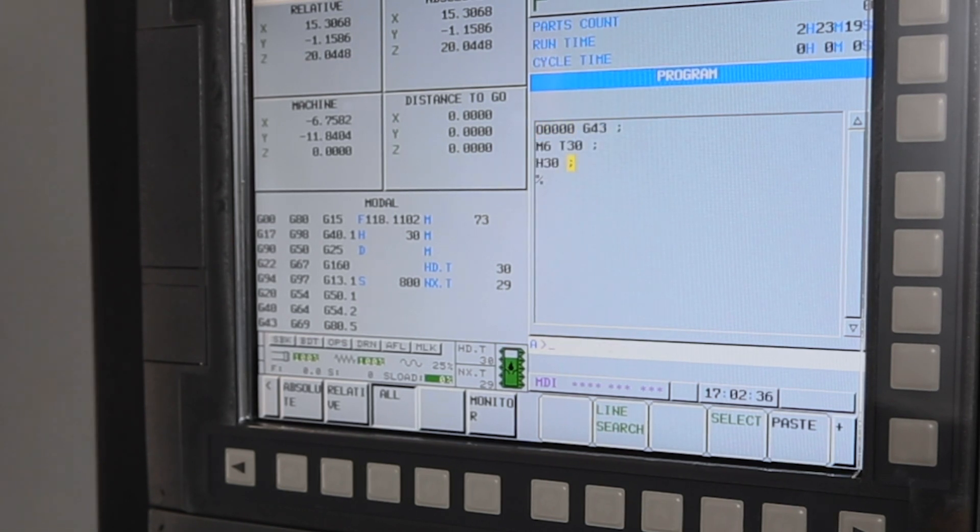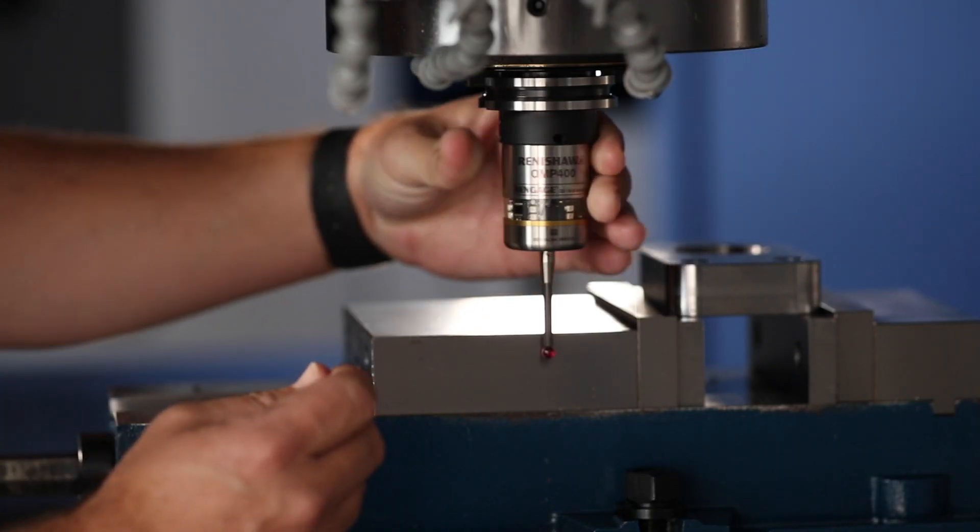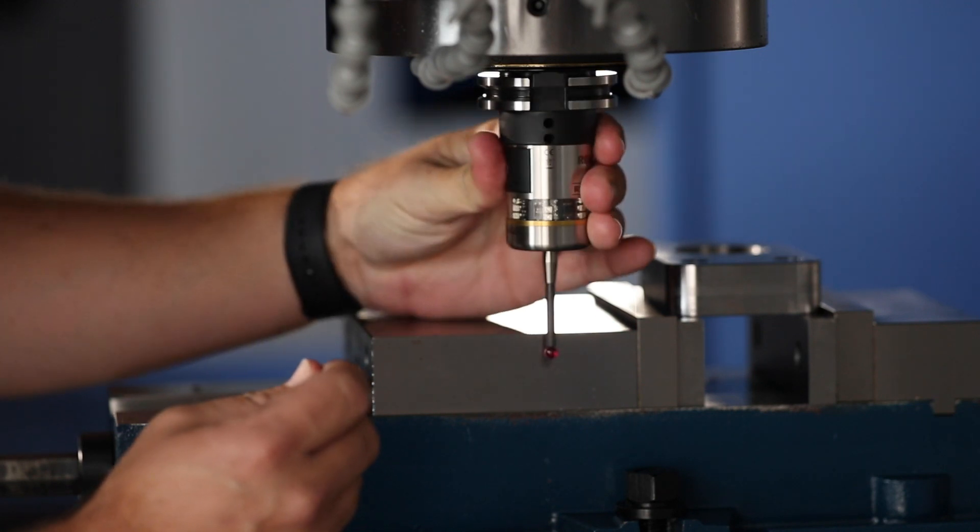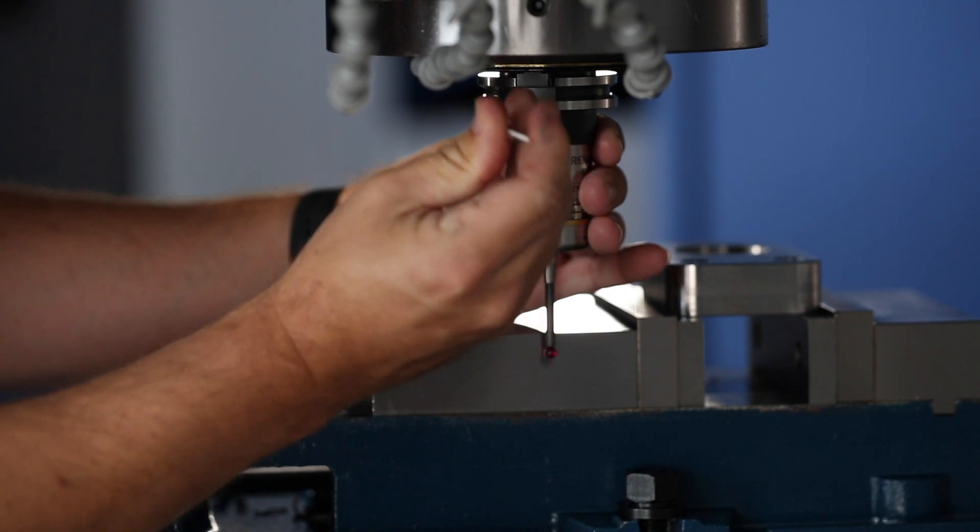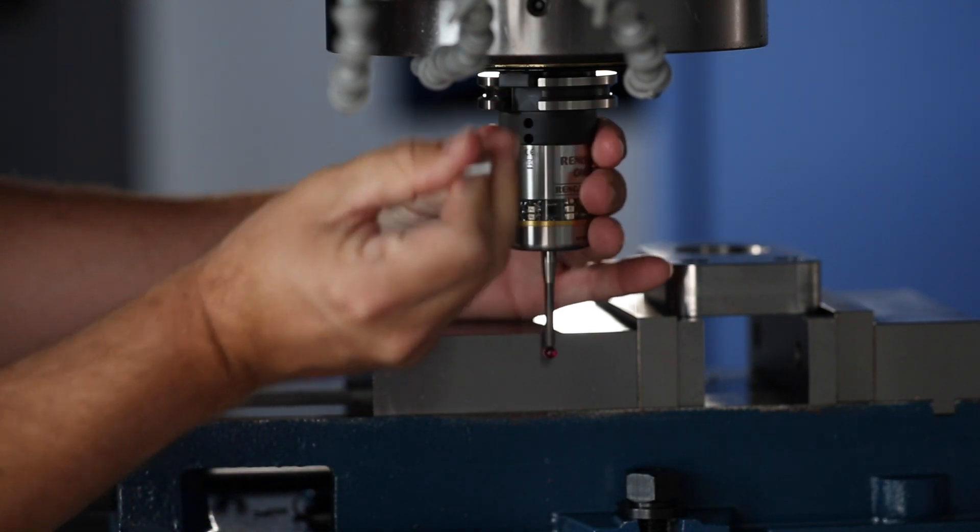So with our probe now in the spindle, we want to get a rough idea of just how out of center that stylus ball truly is. We're going to put it up to a mounted vise jaw or square surface that's mounted in the machine.